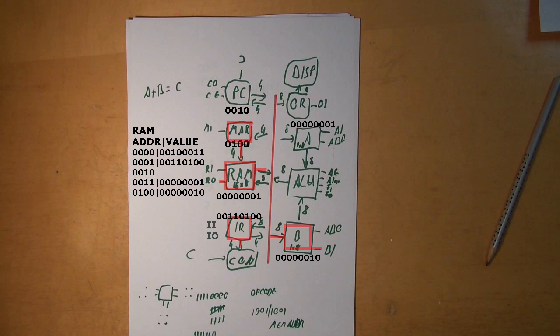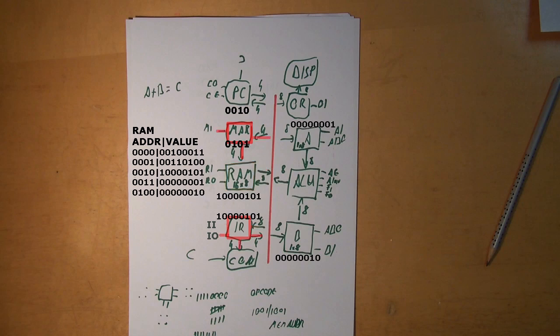Now we have A in the A register and B in the B register, so all we need to do is add those two numbers and store the result. After the fetch cycle for the addition instruction — opcode 1000, which means addition, with memory address 0101 where we want to store the result C — fourth step: IO and MI to prepare the memory address register. Fifth step: ABO, RI, and AE — A and B output their numbers to the ALU, which is activated and set to addition. It outputs the number C, which is stored at address 0101. The program is complete.